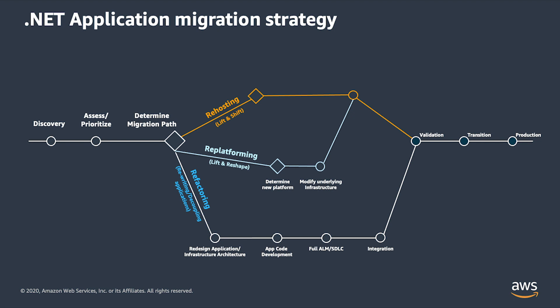The second strategy is re-platform, sometimes referred to as lift, tinker, and shift. The re-platform strategy is similar to rehosting because the core infrastructure of the application is not changed. The biggest difference is that a few cloud optimizations may be made to deliver a specific tangible benefit, such as migrating to a database as a service offering like Amazon Relational Database Service, Amazon RDS.